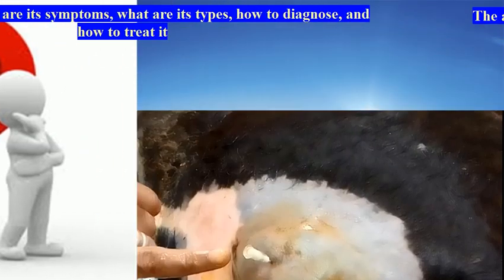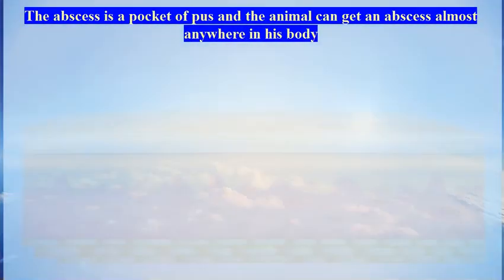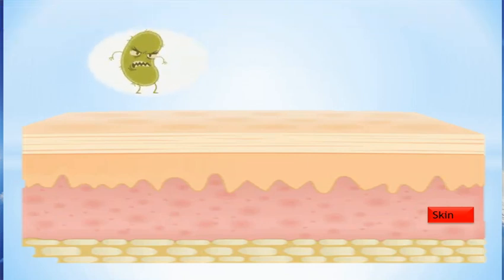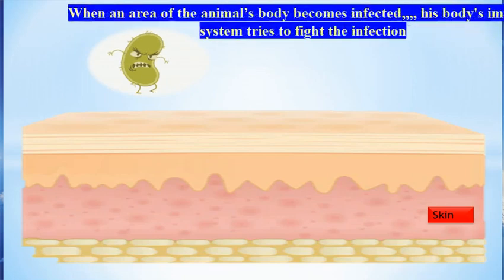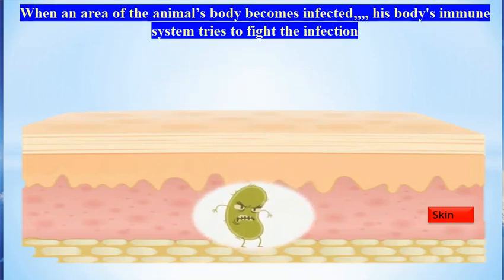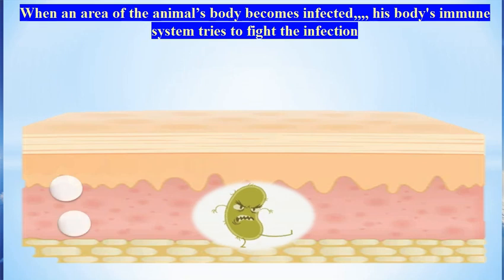The abscess is a pocket of pus, and the animal can get an abscess almost anywhere in its body. When an area of the animal's body becomes infected, the body's immune system tries to fight the infection.